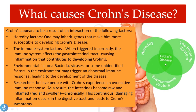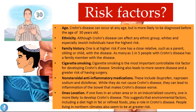Risk factors for Crohn's disease include age — it can occur at any age but is more likely diagnosed before age 30. Ethnicity — whites and especially Jewish individuals have the highest risk. Family history — one is at higher risk with a close relative with the disease, and as many as 1 in 5 people with Crohn's has a family member with the disease. Cigarette smoking is the most important controllable risk factor, and it also leads to more severe disease and a greater risk of surgery.